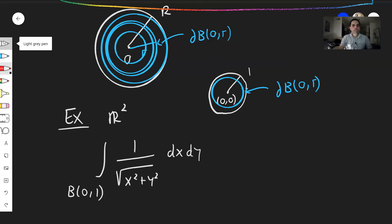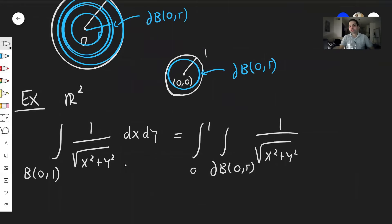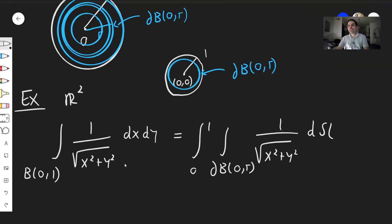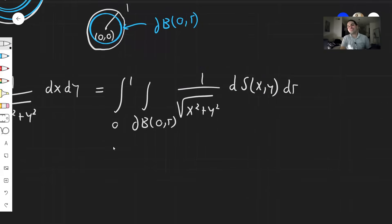So what this becomes, it's just the integral from 0 to 1 integral over the circle B(0,r), 1 over square root of x² plus y² and the surface measure over that circle and then dr. And the cool thing is you don't even need to know what this surface measure is in this case because it will be something familiar. Now, if we're on this circle of radius little r, this thing, 1 over square root of x² plus y², it just simplifies to 1 over r.